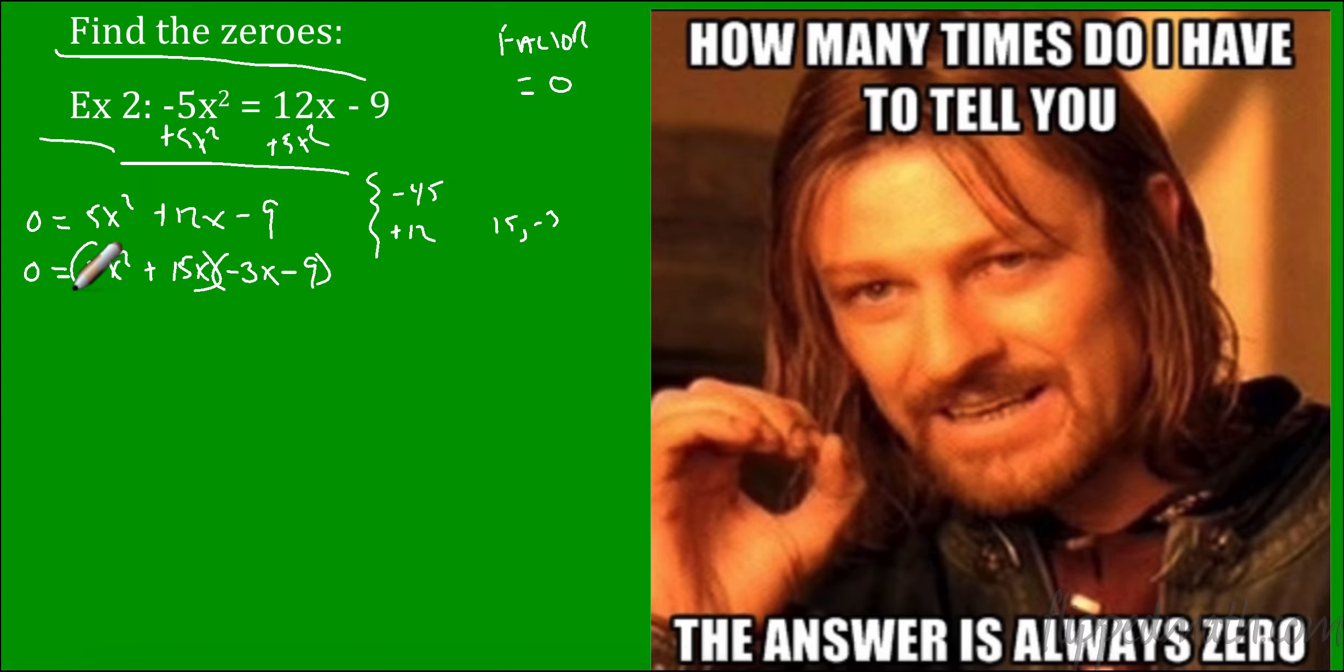So now we have 0 equals 5x squared plus 15x minus 3x minus 9. Let's group this up. First group, I can take a 5x out. So that gives me x plus 3. Second group, I can take a negative 3 out, and that negative is important. So that's x plus 3. So now my two factors are x plus 3 here and here and 5x minus 3.